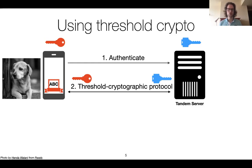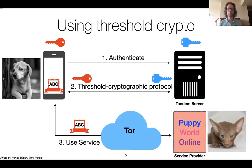The user needs to authenticate to the tandem server so that the tandem server can find the corresponding key share to use in the threshold cryptographic protocol. We run this protocol to create the disclosure proof on an attribute-based credential, and then Puppy can send this via Tor to Puppy World Online to authenticate. Security also seems much better because even if an attacker gains access to his personal device, they only get access to one secret share. And even if the device has a built-in authentication mechanism to the tandem server, Puppy can always call the tandem server and say please don't accept this anymore and destroy my secret share, thereby maintaining security of the key as a whole.